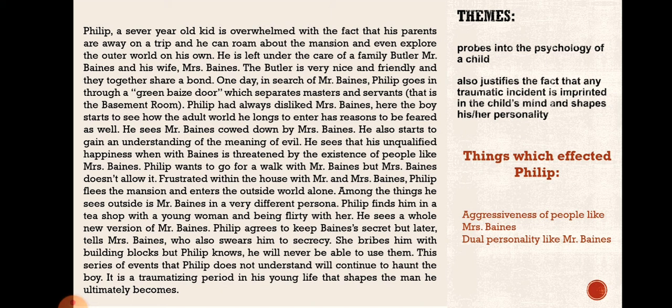Frustrated and confined within the house, Philip flees and enters the world outside alone. Among the things he sees outside is Mr. Baines in a very different persona — Philip finds him in a tea shop with a young woman, being flirty with her. He sees a whole new version of Mr. Baines. Philip agrees to keep Baines's secret but cannot, and later tells Mrs. Baines.